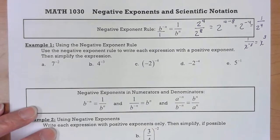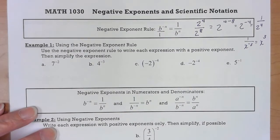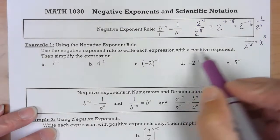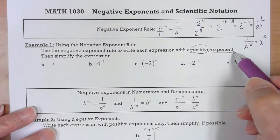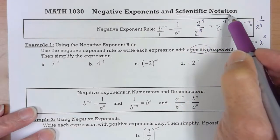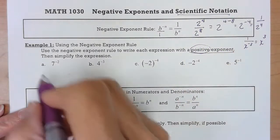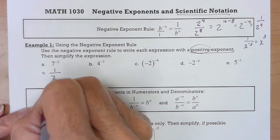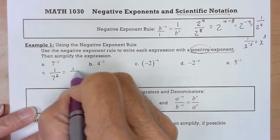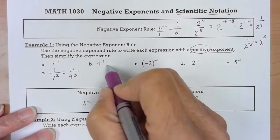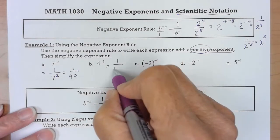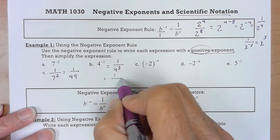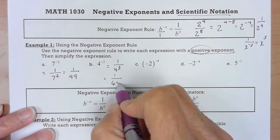So using the negative exponent rule to write each expression with a positive exponent, then simplify the expression. Our answers in algebra always need to have positive exponents except for one exception and that's when we deal with scientific notation. So this one I'm going to move that to the denominator and then I'm going to simplify. This one goes to the denominator and 4 to the third is 64.